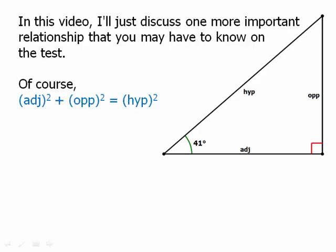We know, of course, from the Pythagorean theorem that the adjacent squared plus the opposite squared has to equal the hypotenuse squared. That's obviously true because of the Pythagorean theorem. We'll divide each term by hypotenuse squared. On the right side, we'll get hypotenuse squared divided by hypotenuse squared, which is 1.